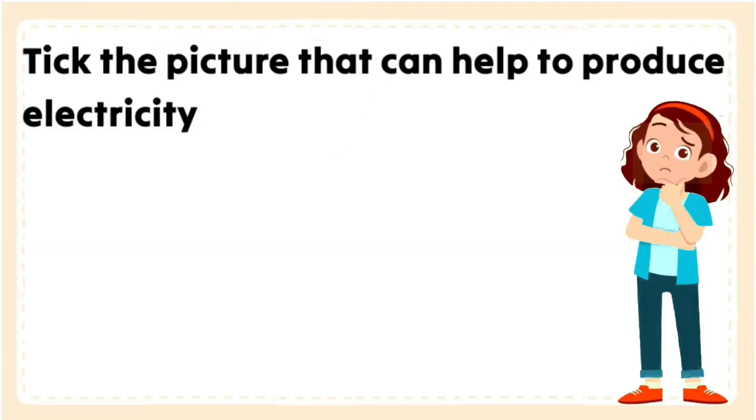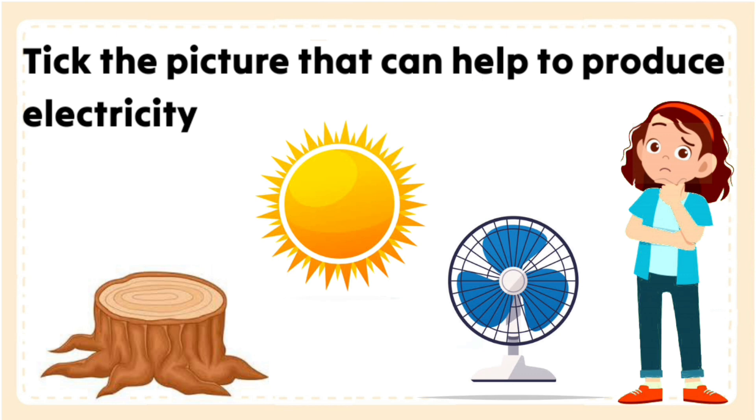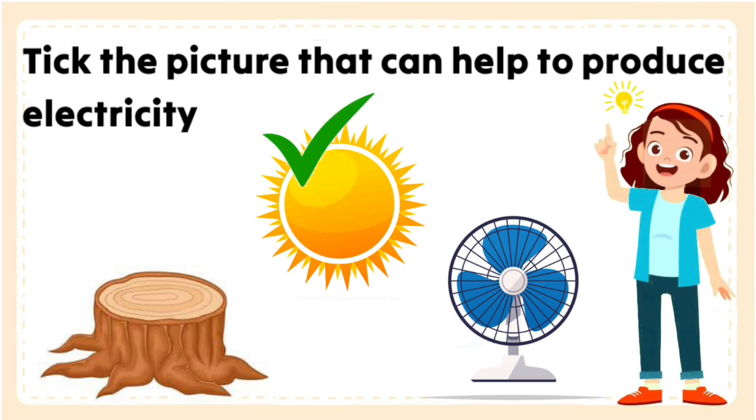Tick the picture that can help to produce electricity. It's the sun. When the sun shines on a solar cell, the cell turns light energy into electricity.